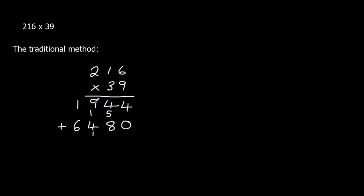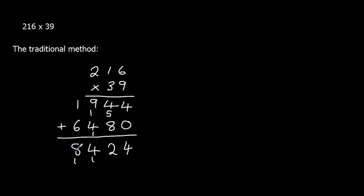So this is what we got by multiplying 9 by 216, and this is when we multiplied 30 by 216. We just add them up going down: 4 plus 0 is 4; 8 plus 4 is 12, write 2 carry 1; 9 plus 4 plus 1 is 14, write 4 carry 1; 1 plus 6 plus 1 is 8. So the answer is 8,424.